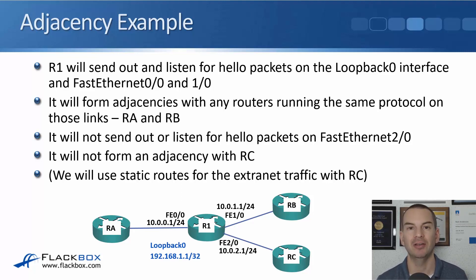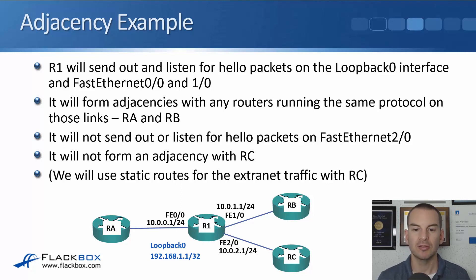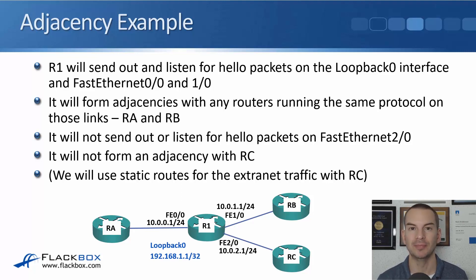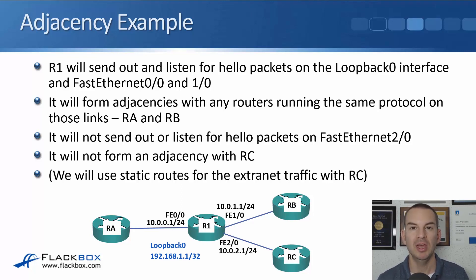R1 will not give out any network information to RC. In that case, static routes could be used between R1 and RC to provide very limited connectivity.